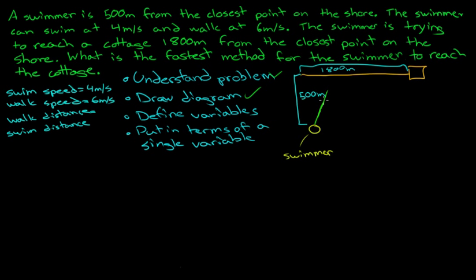We know that the swimmer is going to swim at an angle — it's the only thing that makes sense. They'll reach a point on the shore, and then this distance here is the point at which they'll walk. So if we define a point here as x, then the walking distance is going to be 1800 meters minus x. So if x was 100 meters, then we'd be walking 1700 meters. Our walking distance is 1800 minus x.